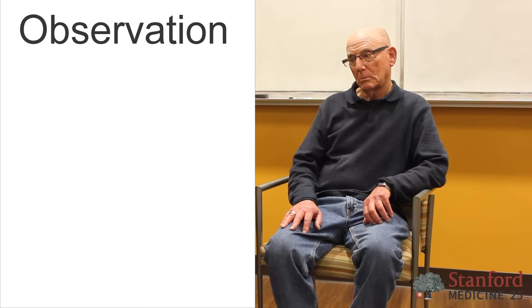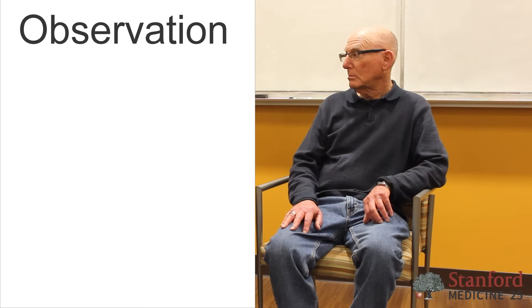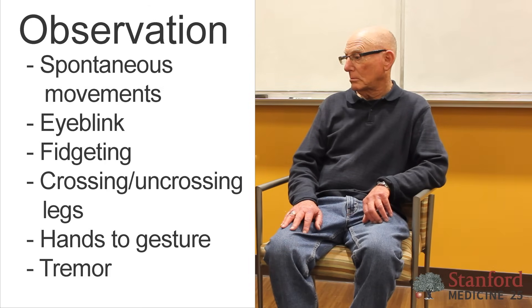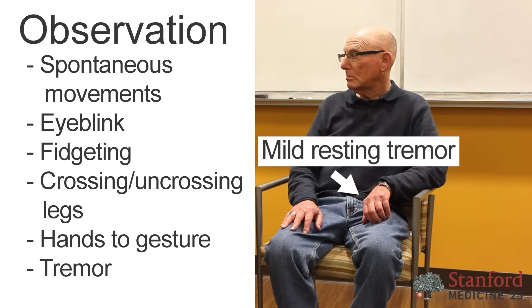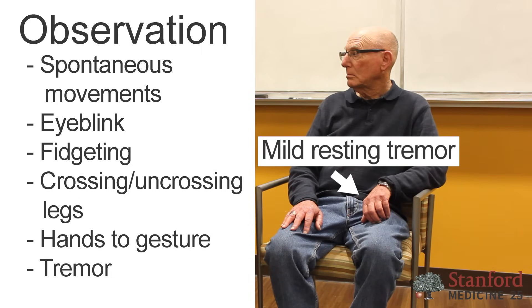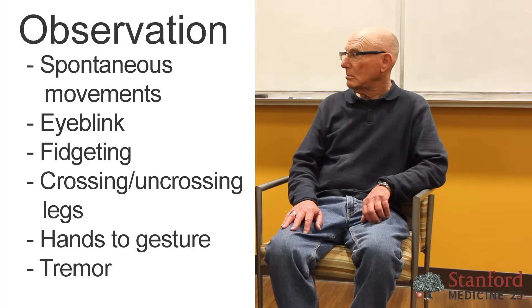A fifth part of the exam is observation, and this is a really important piece because you want to look at all of the movements that are happening when the patient isn't performing the exam — when they're giving their history or you're asking questions. You're going to closely observe: are there spontaneous movements? Do they have normal eye blink? Are they fidgeting and crossing and uncrossing their legs? Are they using their hands to gesture? Do you see tremor coming out? Observation should start the moment the patient walks into the room.